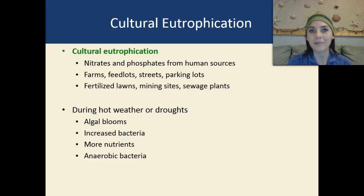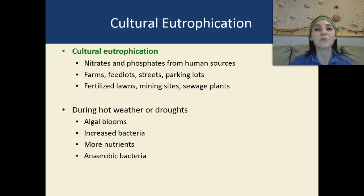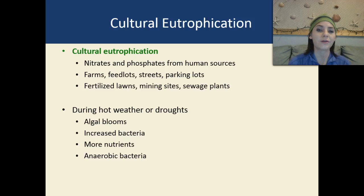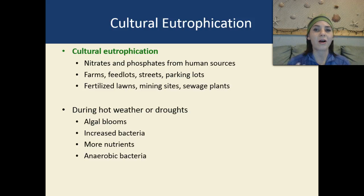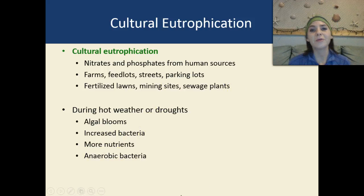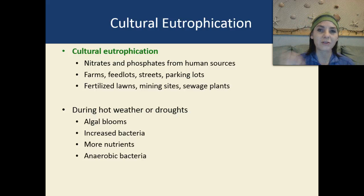We also have man-made eutrophication, called cultural eutrophication. Cultural eutrophication is caused by nitrates and phosphates from human sources such as farms, feedlots, streets, parking lots, fertilized lawns, mining sites, and sewage plants. During hot weather or droughts, you get huge algal blooms, which increases the number of anaerobic bacteria in the water. This leads to more nutrients, which leads to more bacteria, which leads to more algae — basically a cycle that keeps going round and round.